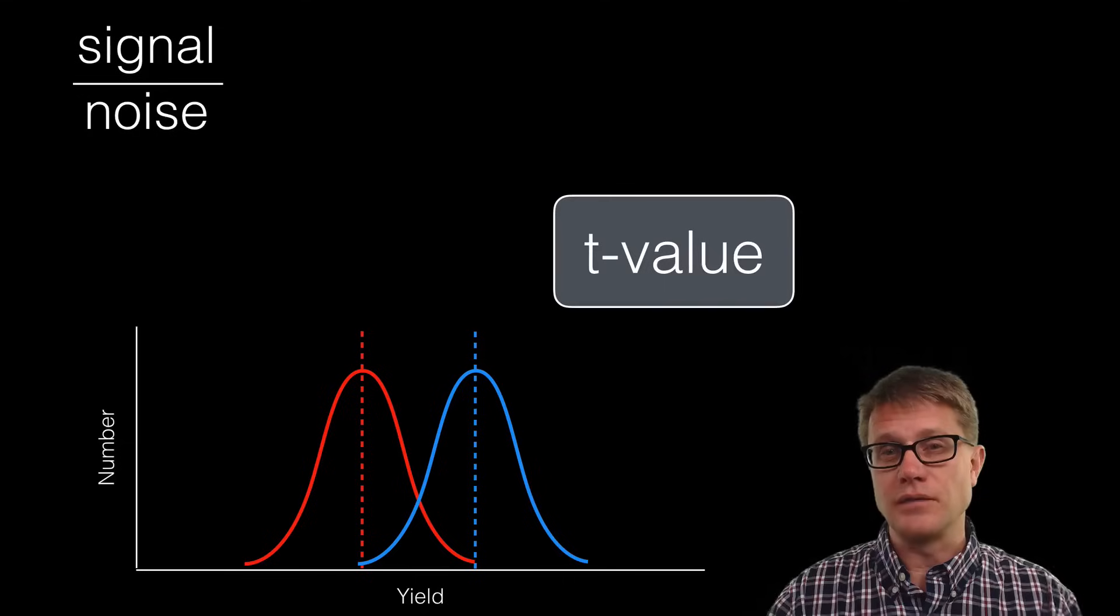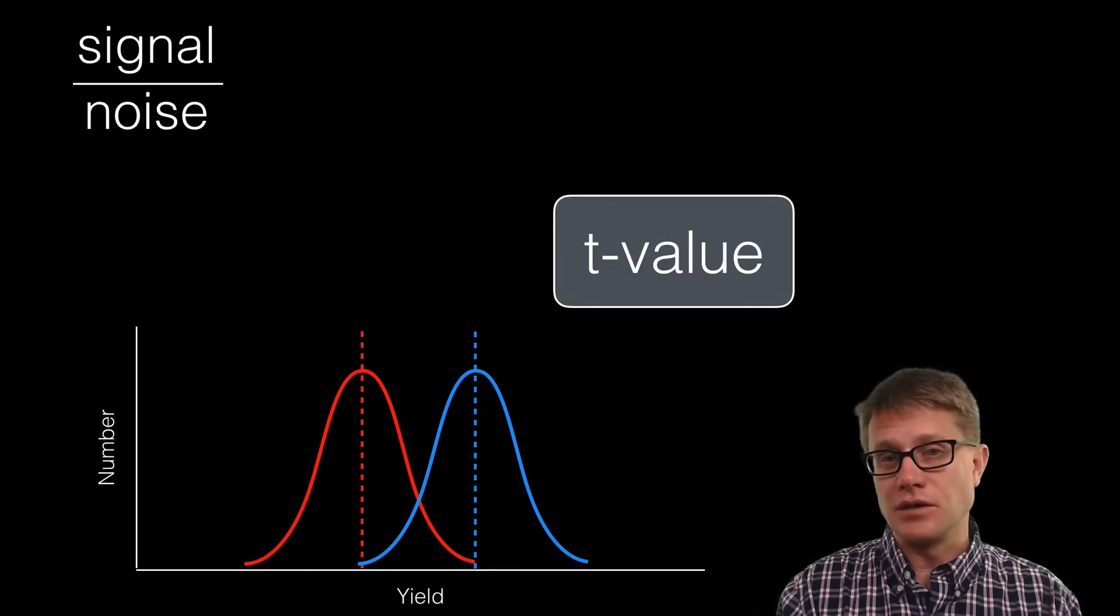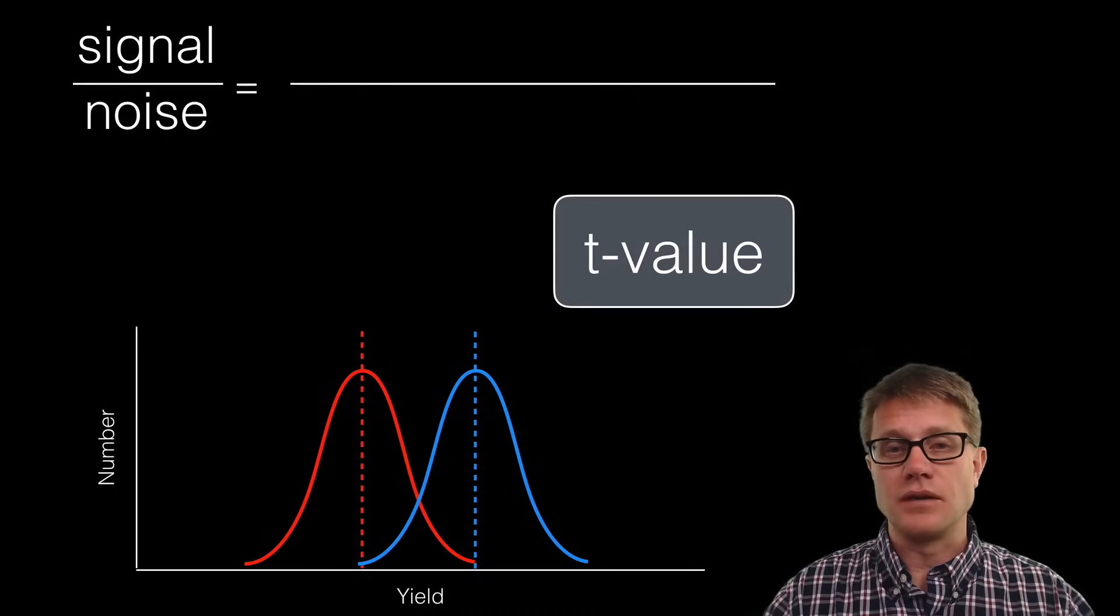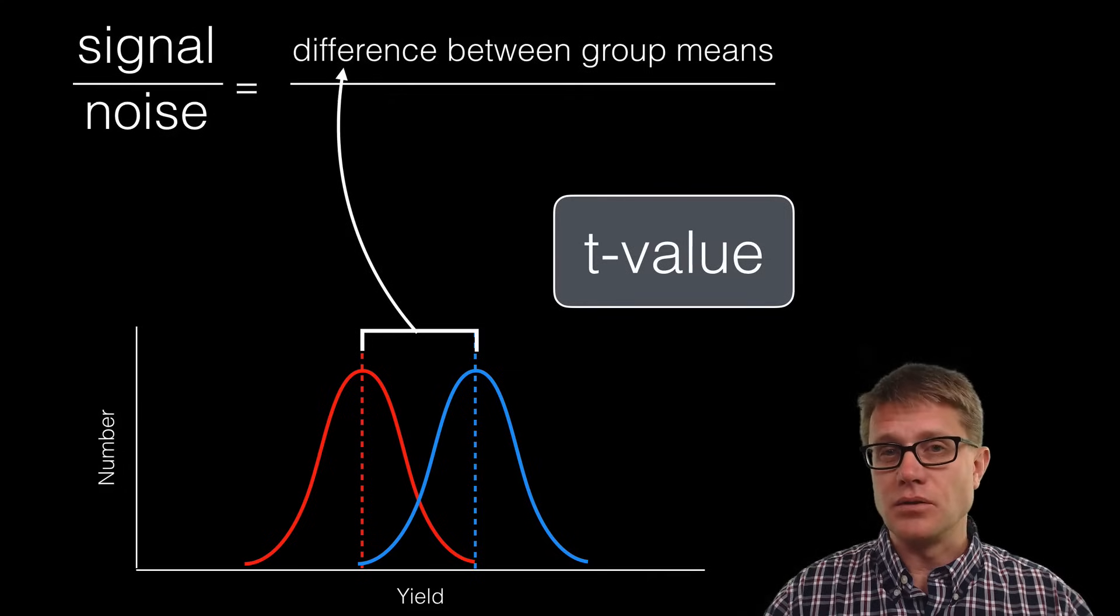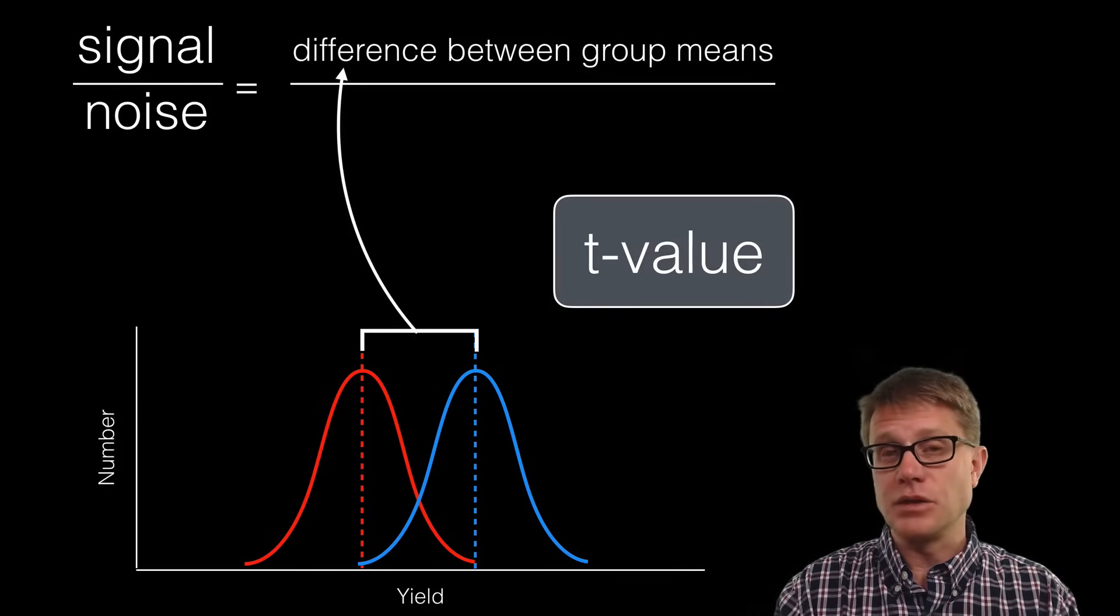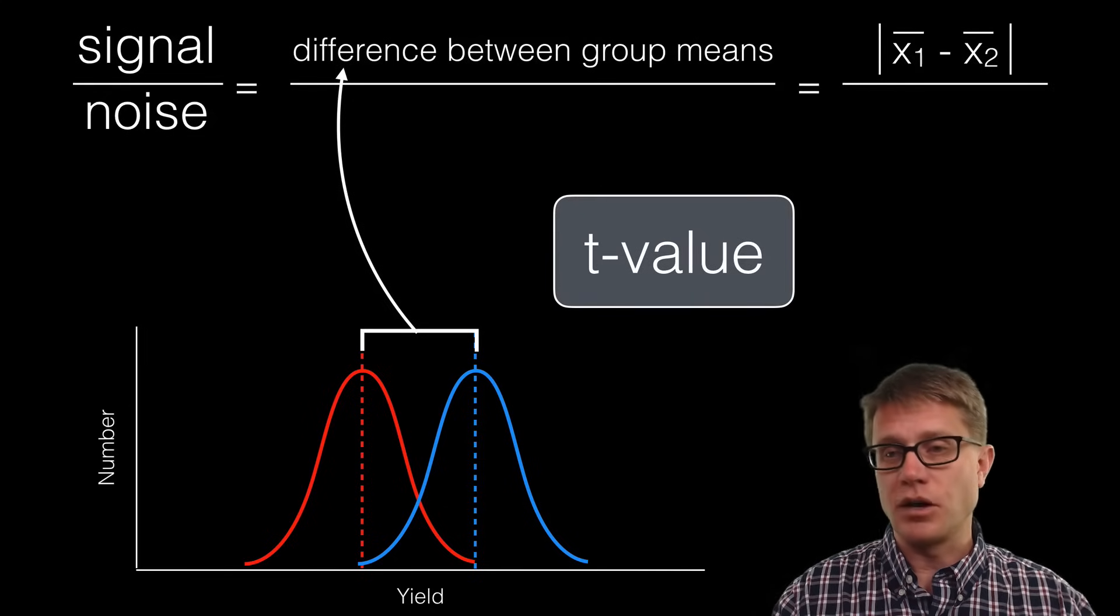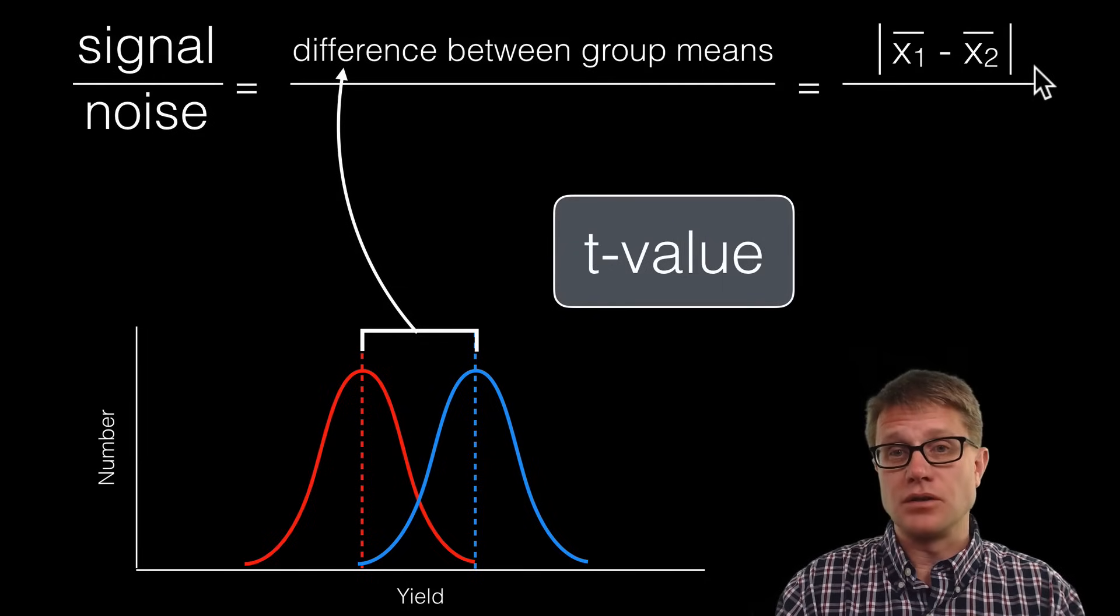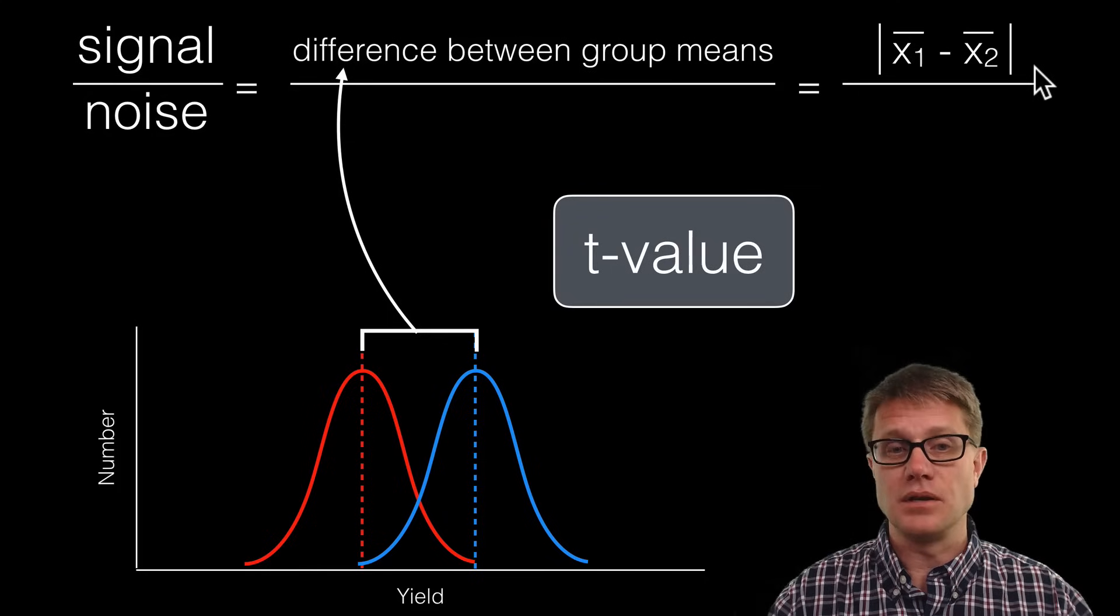That's where the t-value comes in handy. It's really a ratio of signal to noise. Signal is going to be numbers that tell me the difference between these two samples, and noise is going to be numbers that kind of get in the way. So how do I figure out the signal? The easiest way to do that is simply find the difference between the two means.